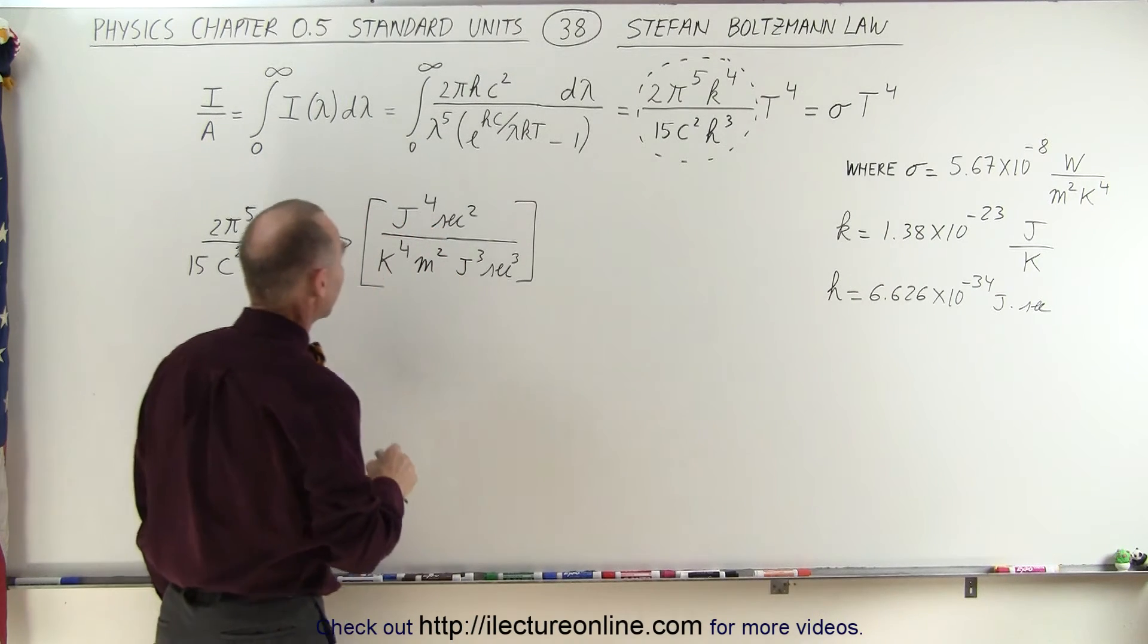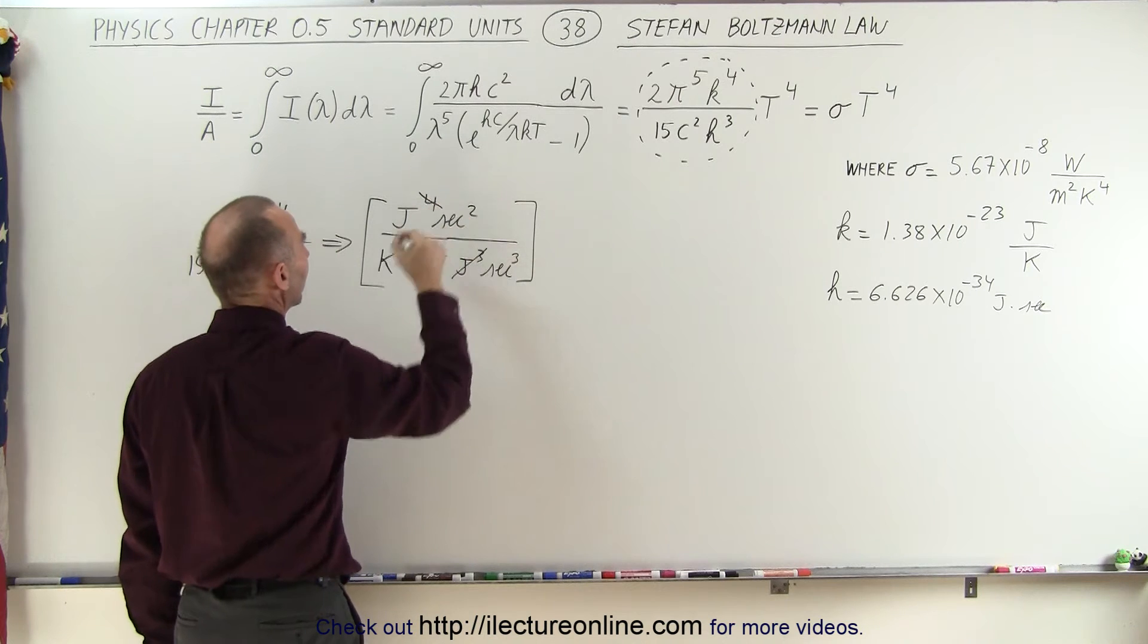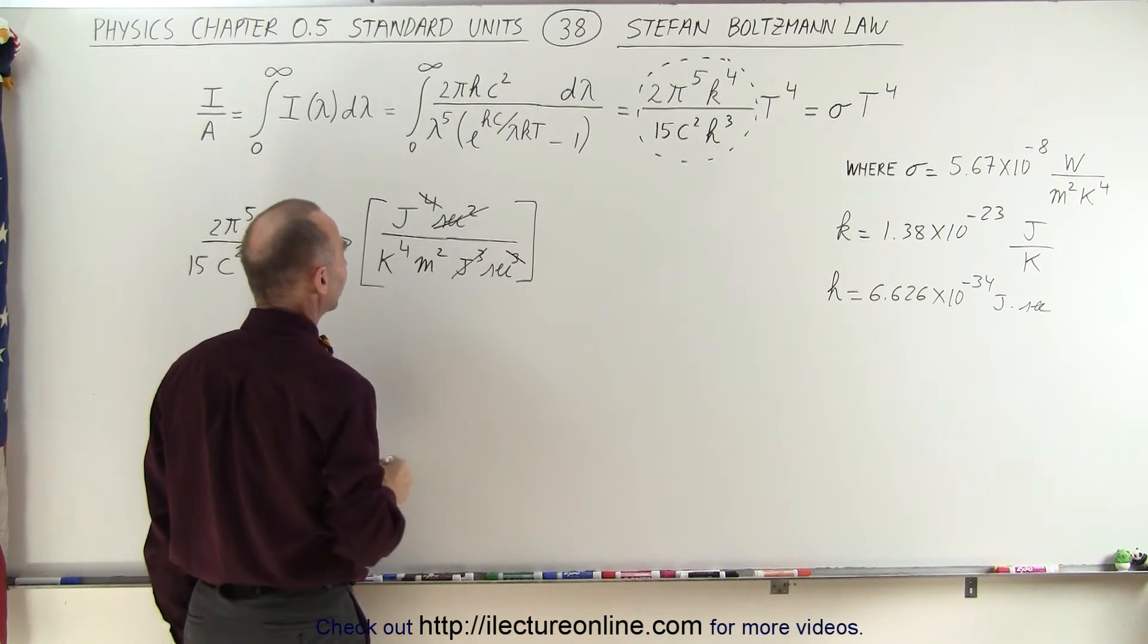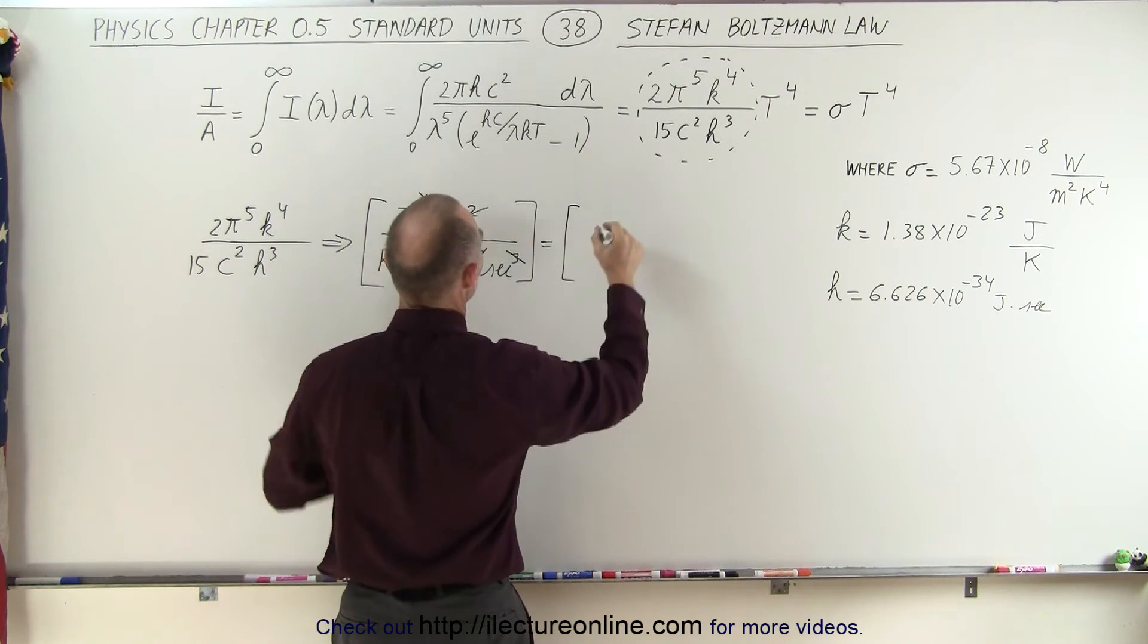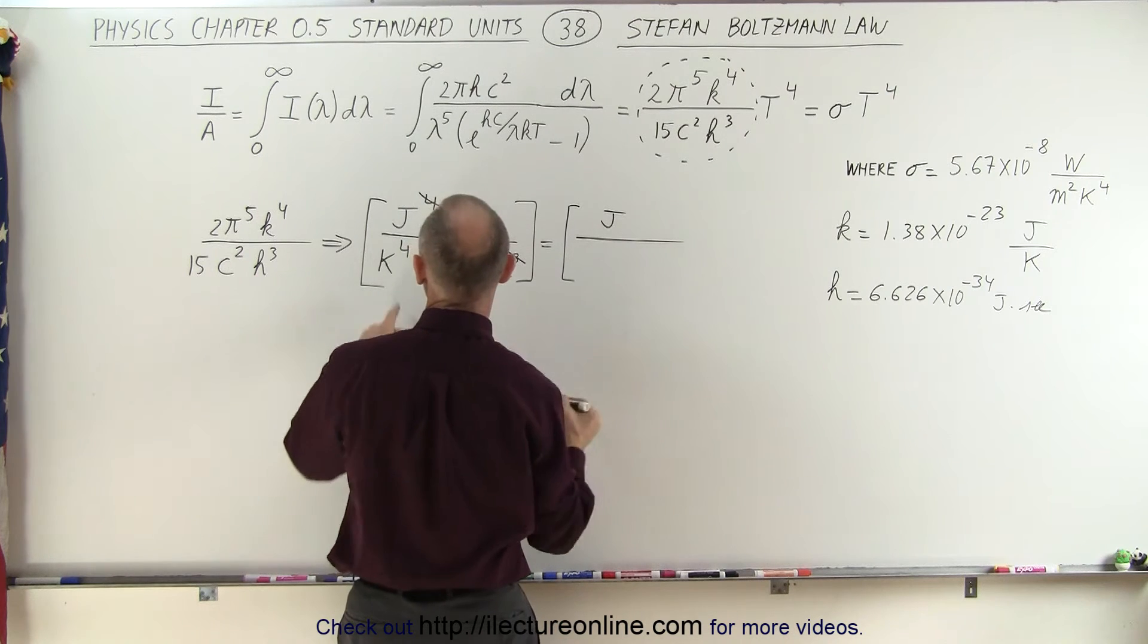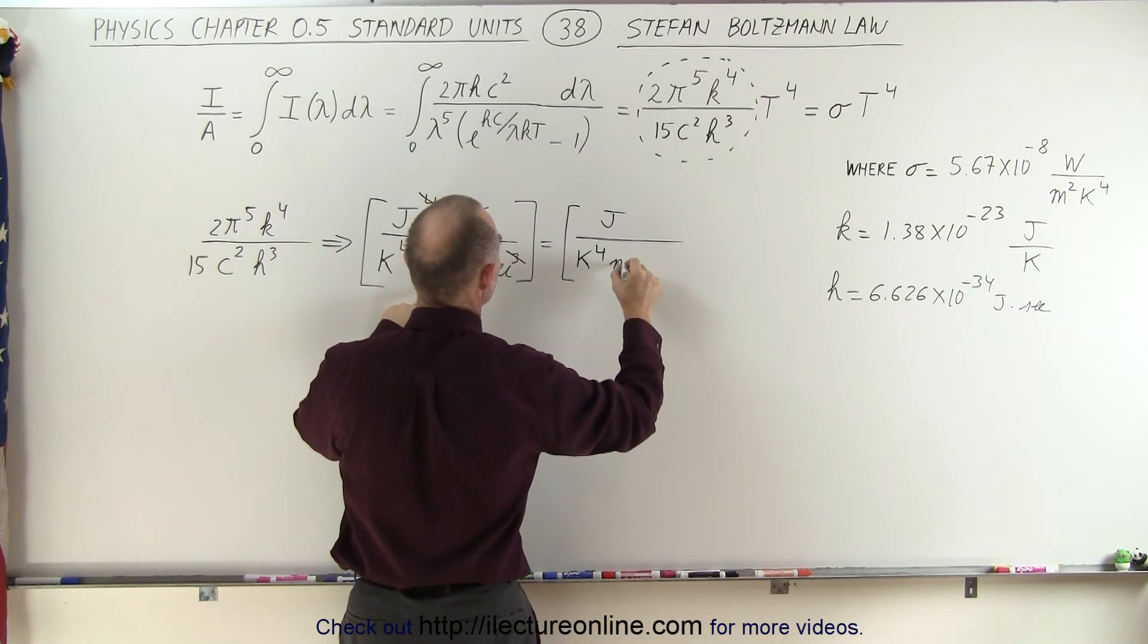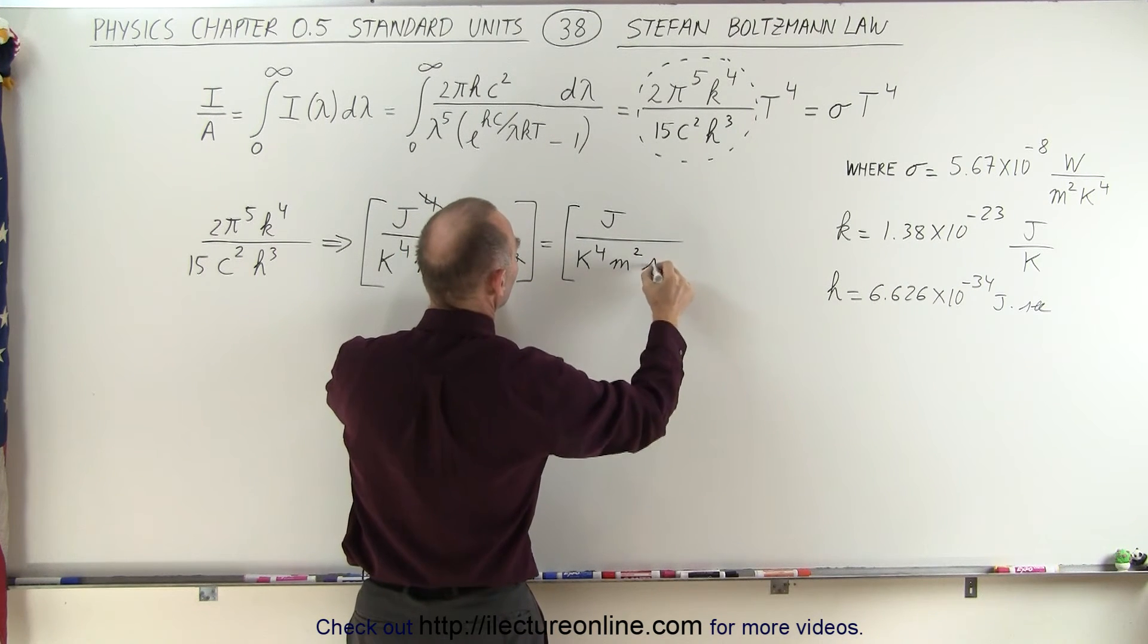Let's find out. We have joules cubed and joules to the fourth power, so this cancels out with that. Seconds squared, seconds cubed, this cancels out with that. Let's see what we have left. This can then be simplified to be joules divided by Kelvin to the fourth power meter squared, and then we have per second. We still have a second in the denominator.